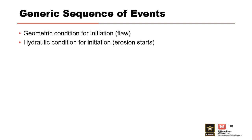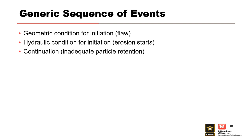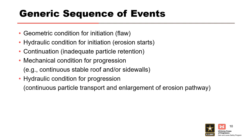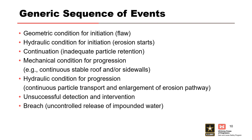Initiation considers the hydraulic condition for internal erosion to start by one of the initiating mechanisms. Continuation considers the potential for an unfiltered exit and the particle retention capability of any filters or transition zones. Progression is decomposed into mechanical and hydraulic conditions: the mechanical condition considers the stability of the internal erosion pathway, including roofs of pipes or cracks and stable sidewalls for vertical cracks, while the hydraulic condition involves continuous particle transport and enlargement of the erosion pathway. Like flaw, intervention is not a phase of internal erosion but can arrest the potential failure mode development. If detection and intervention are unsuccessful, breach occurs.